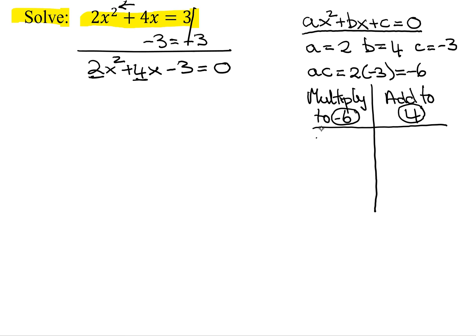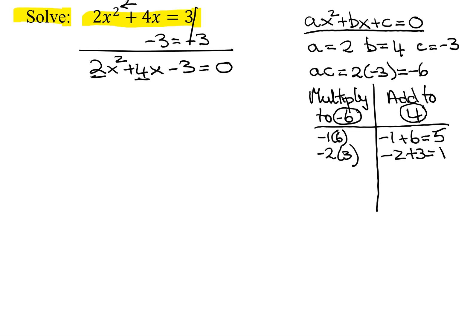So I could look at negative 1 and 6 — they definitely multiply to negative 6. Negative 1 plus 6 equals 5, not the number I'm looking for. Then negative 2 and 3: negative 2 plus 3 equals positive 1. So my factors have met in the middle. There are no other choices, so this one's not going to factor, and I'm going to have to use the quadratic formula.